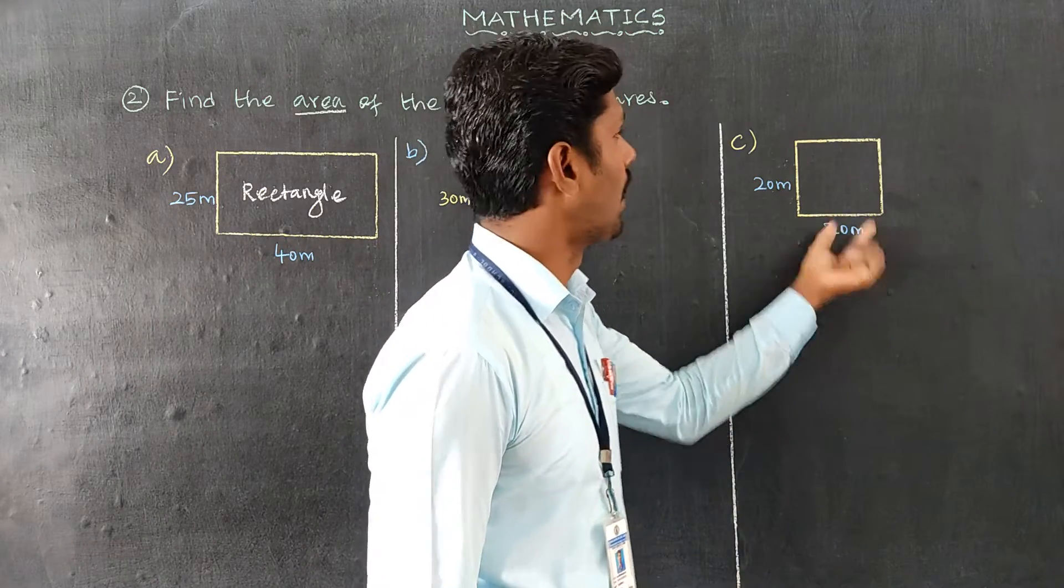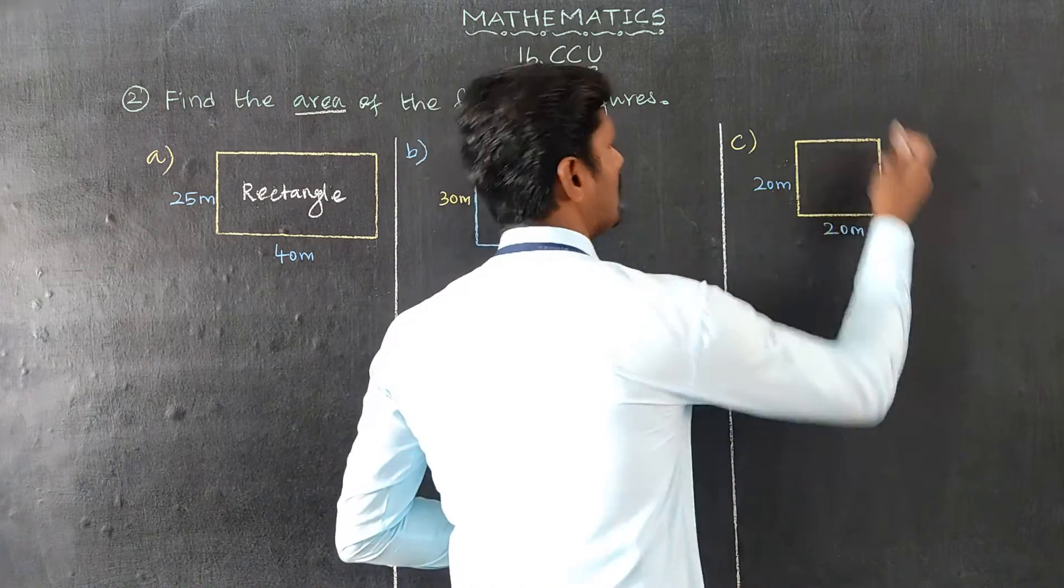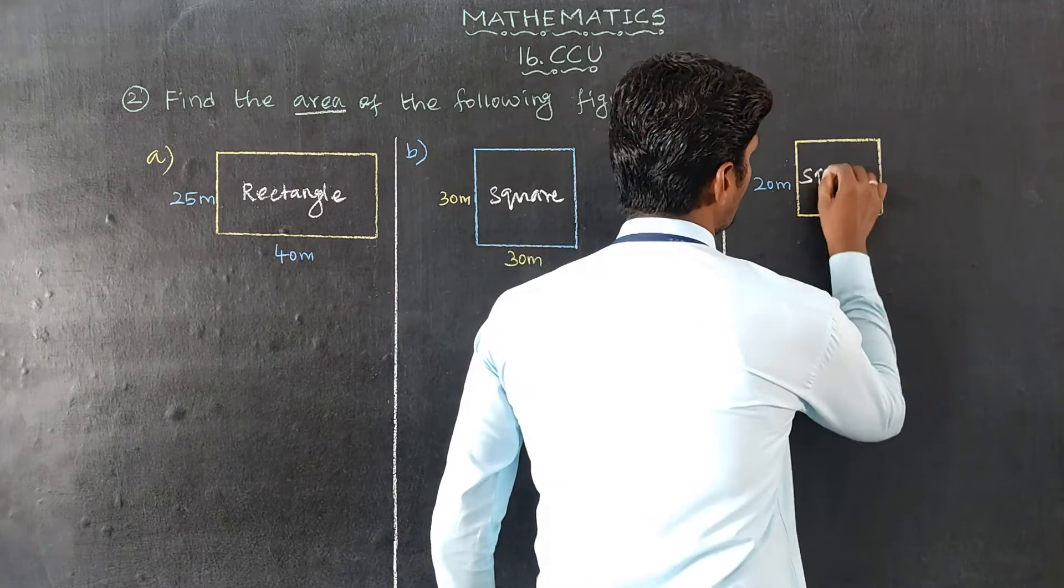And last one, 20 meters. All sides are equal, this is also a square.